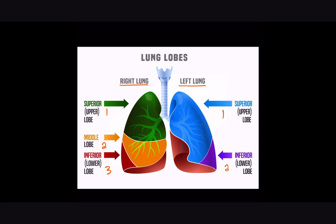The reason we only have two lobes on the left lung is because of this little notch right here — this indent — where there's a section of the lung that's missing in comparison to the right lung. And this is what we call the cardiac notch. This space is cut out because it's where our heart sits, and because our heart sits on the left side of our body, this is why our left lung only has two lobes.